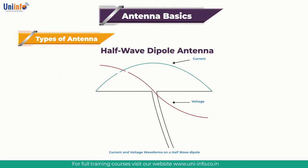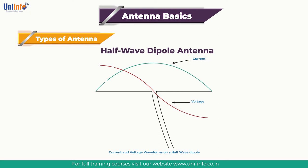As the ends are open-circuit, current at these points is zero, but the voltage is at its maximum. As the measurement point moves away from the ends, the quantities vary sinusoidally — the voltage falling but the current rising. The current then reaches a maximum and the voltage a minimum at a length equal to an electrical quarter-wavelength from the ends. As it is a half-wave dipole, this point occurs in the centre.